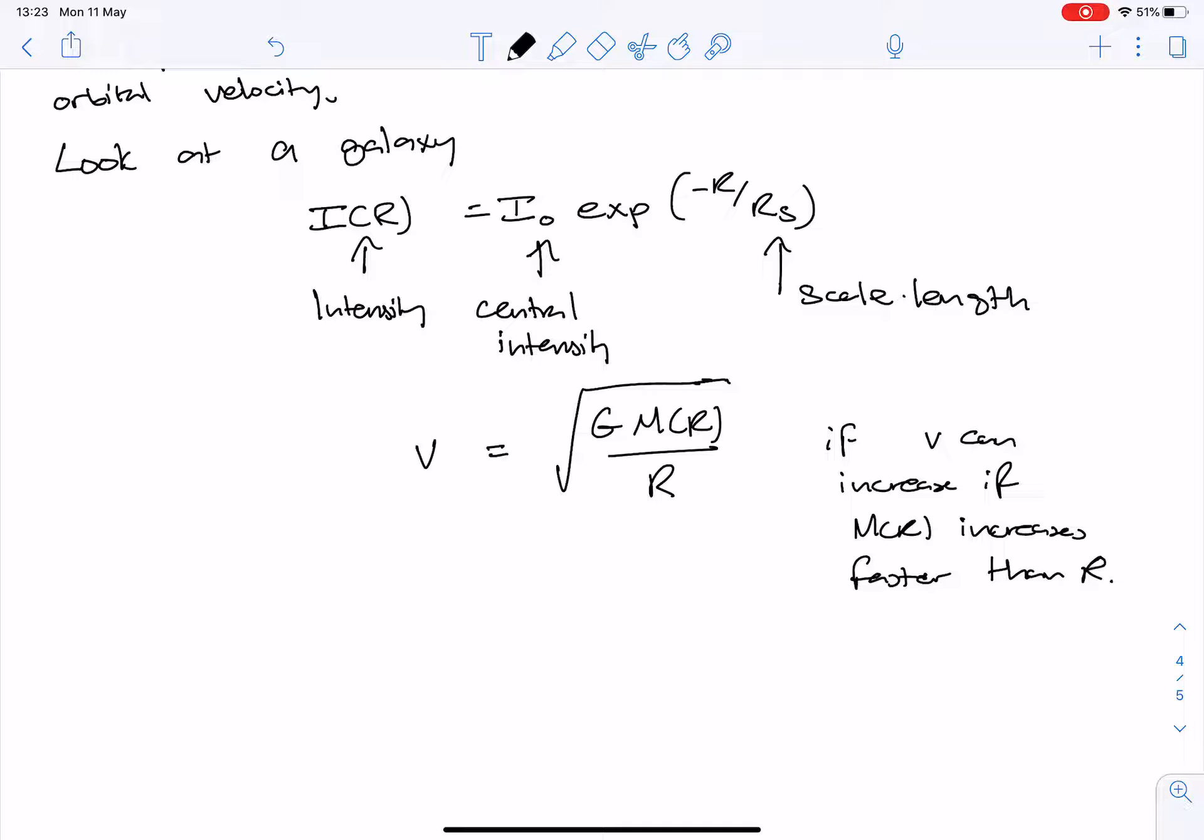And you can imagine, for example, if I have a uniformly filled sphere, the mass inside it goes as the volume, volume times density, and the volume goes as r cubed. So if I had a uniformly filled sphere, then in fact my mass of r would go up faster than r, and therefore the velocity could still increase.